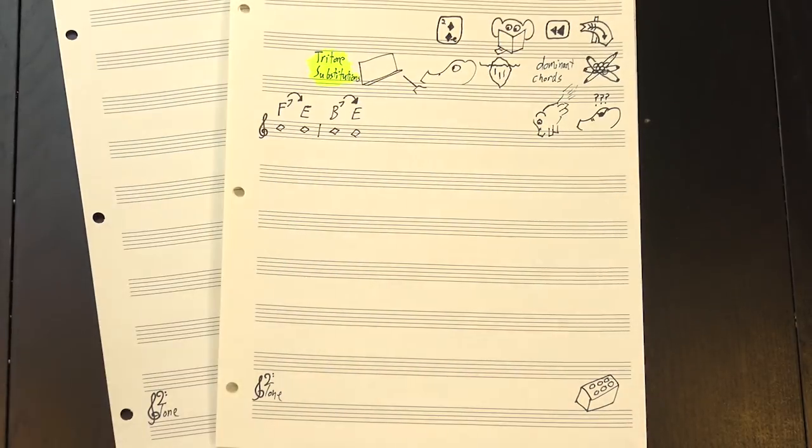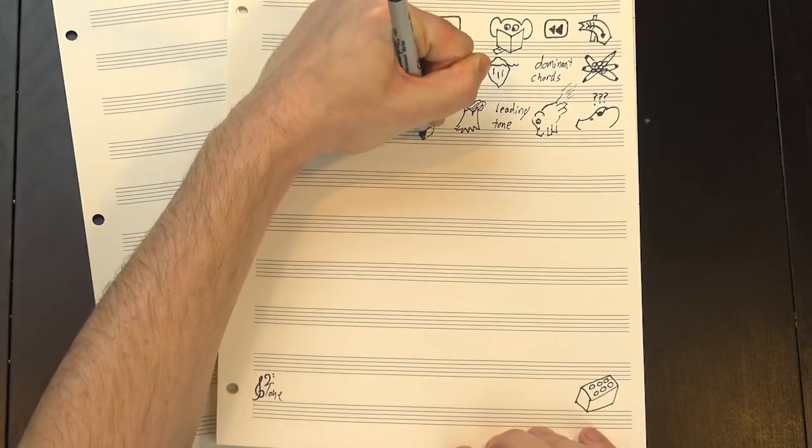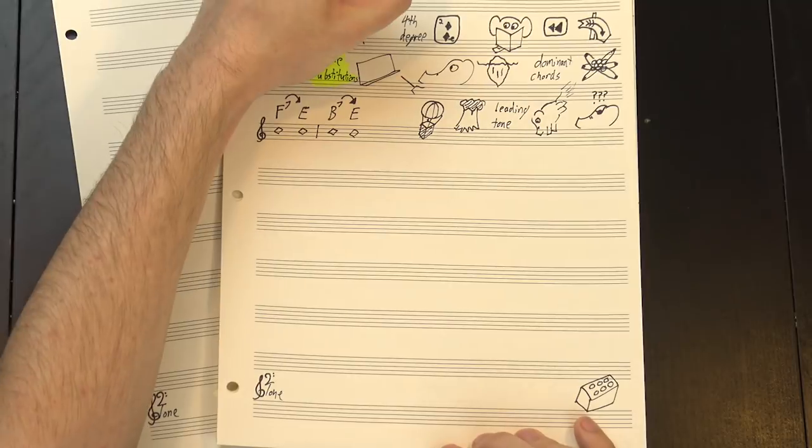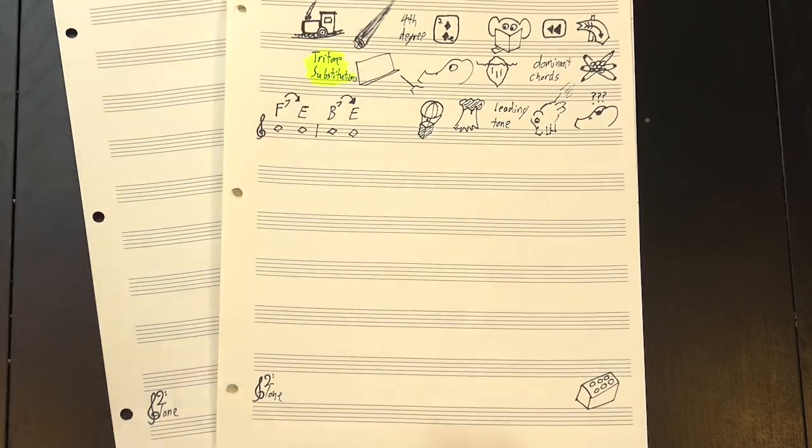This happens because of two notes. First, there's the leading tone, a note a half-step below the root of the key that really wants to resolve upwards. And then there's the 4th degree, a half-step above the 3rd, which wants to resolve down. Together, these two notes form the engine that drives dominant resolutions.